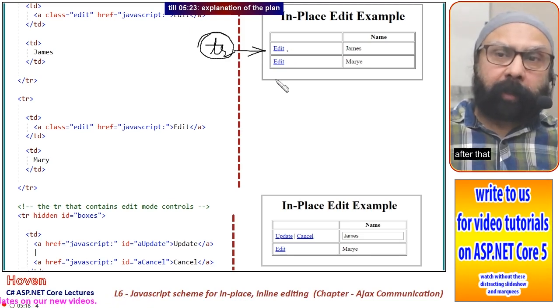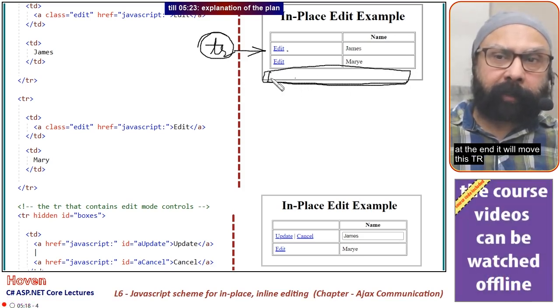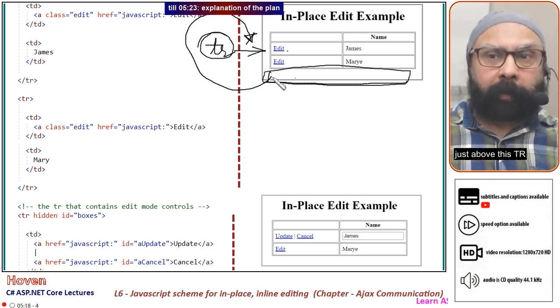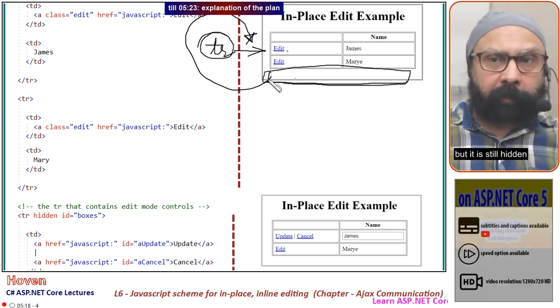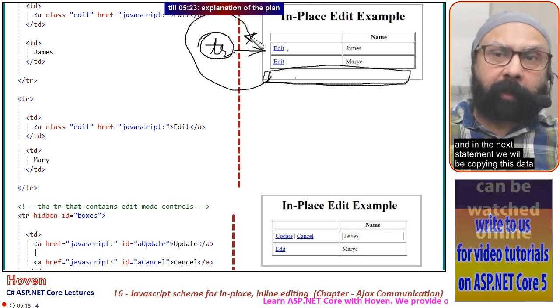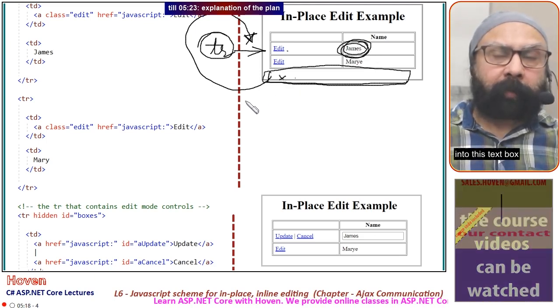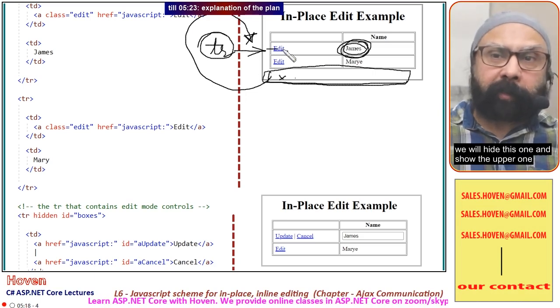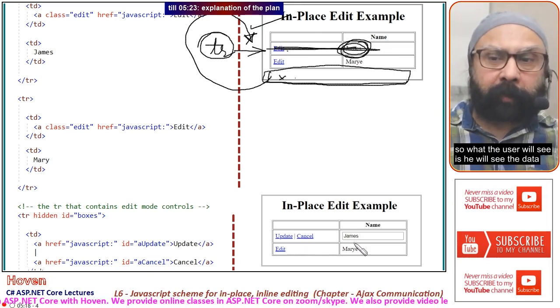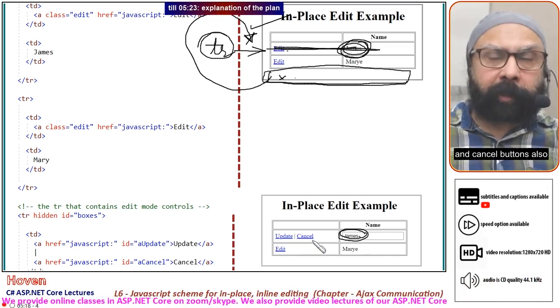After that, it will move the hidden tr from the end just above this tr, but it is still hidden. The next statement copies this data into the textbox. Once the copy is done, we hide this one and show the upper one. The user will see the data in the textbox and the update and cancel buttons.